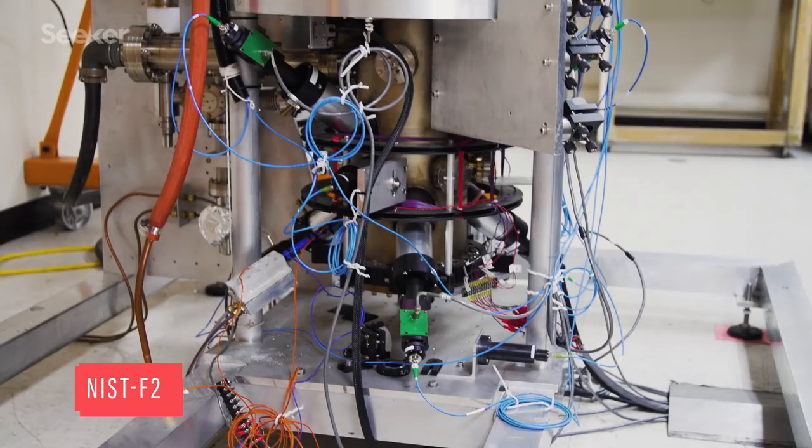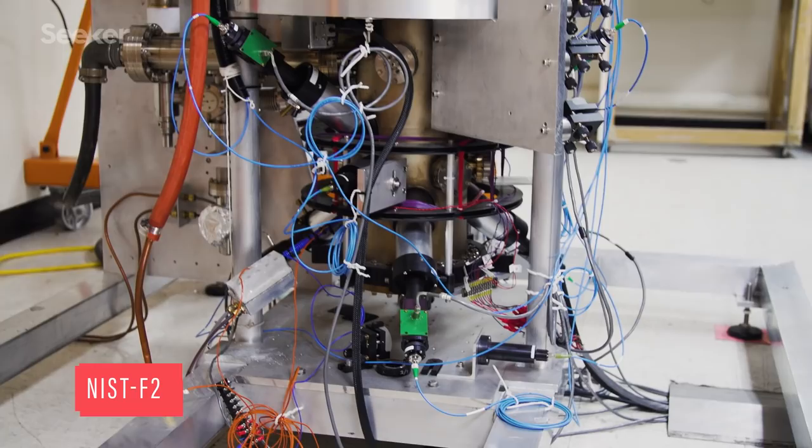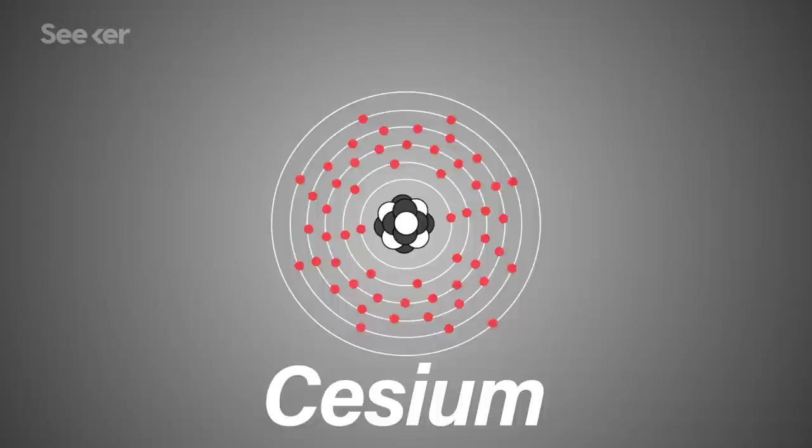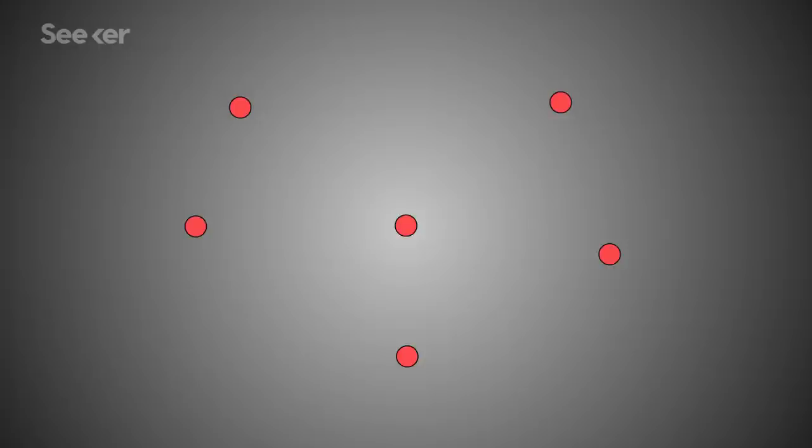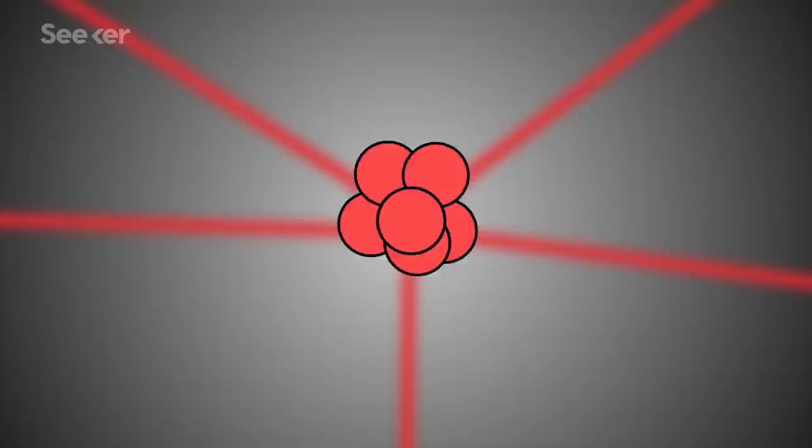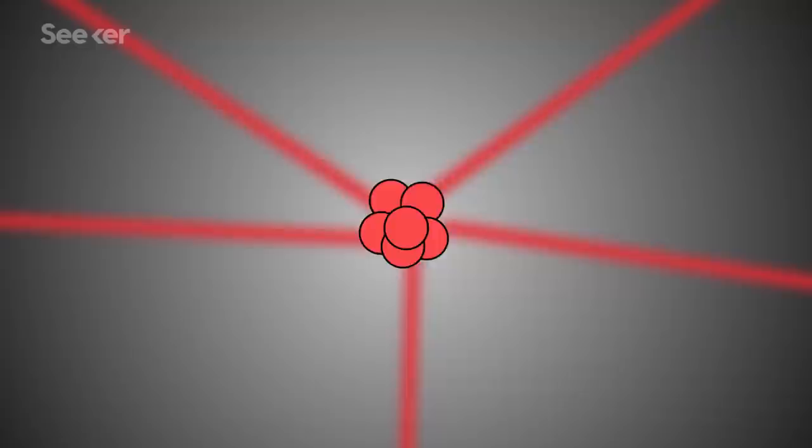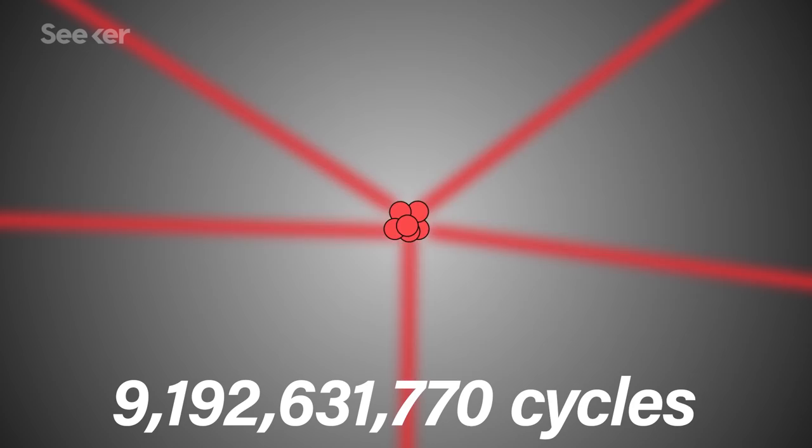This is the NIST-F2, an atomic clock at the National Institute of Standards and Technology in Colorado. It's one of the world's master clocks, and is designed to measure the very specific oscillations of cesium, a silvery element on the periodic table. Inside it, a gas of cesium atoms enter the clock's vacuum chamber. Microwave laser beams push the cesium atoms together into a ball. The lasers toss the ball up, then it falls back down, emitting photons. The time it takes for the cesium ball to move between two different energy levels is 9,192,631,770 cycles. And that is the definition of a second.